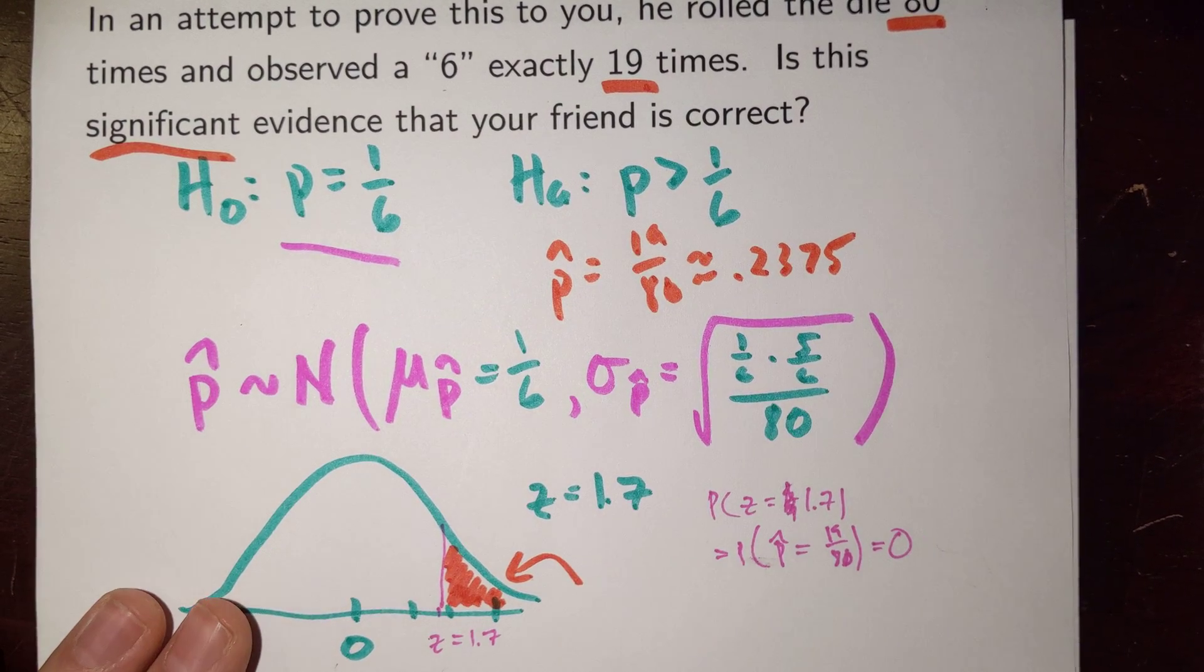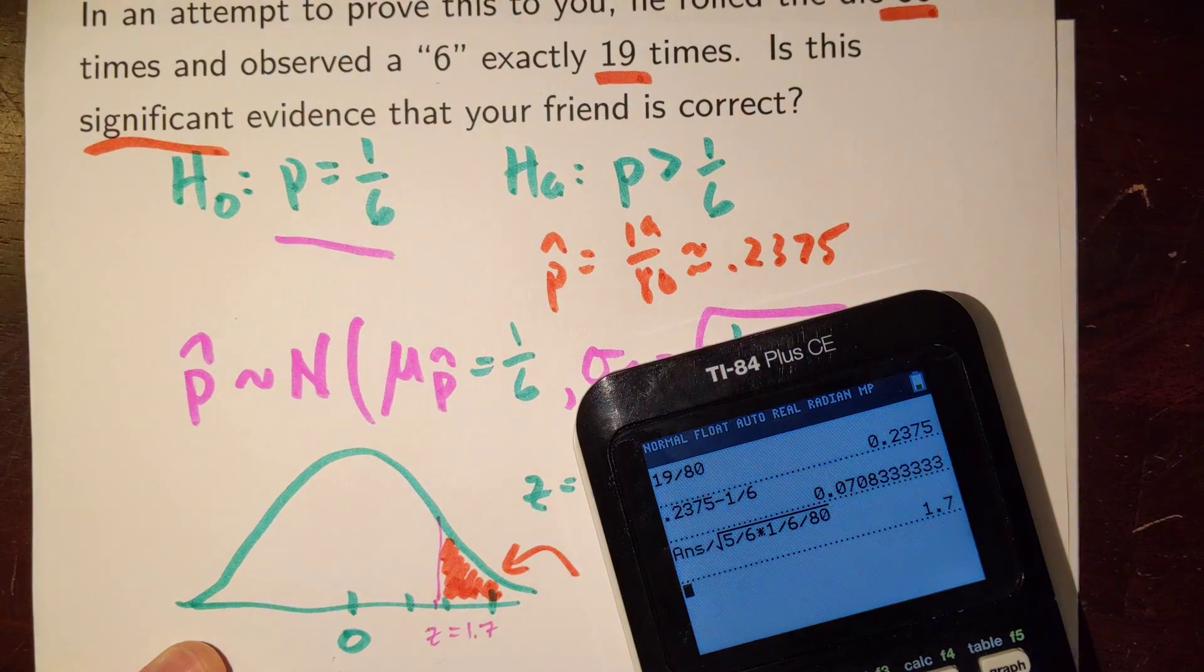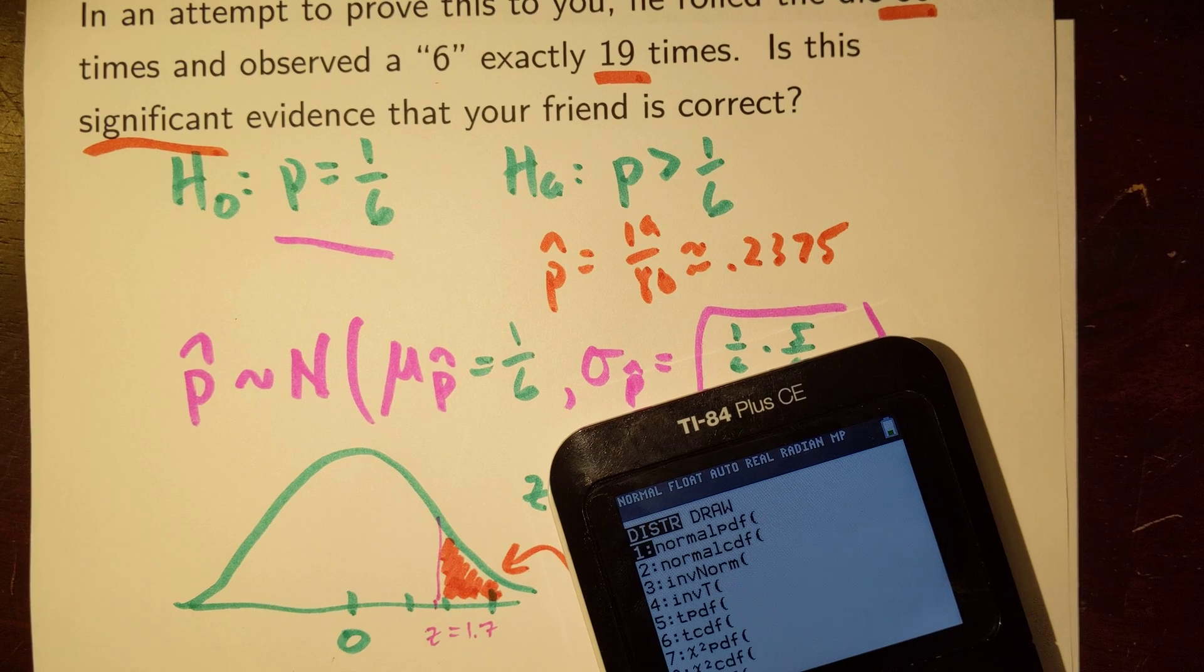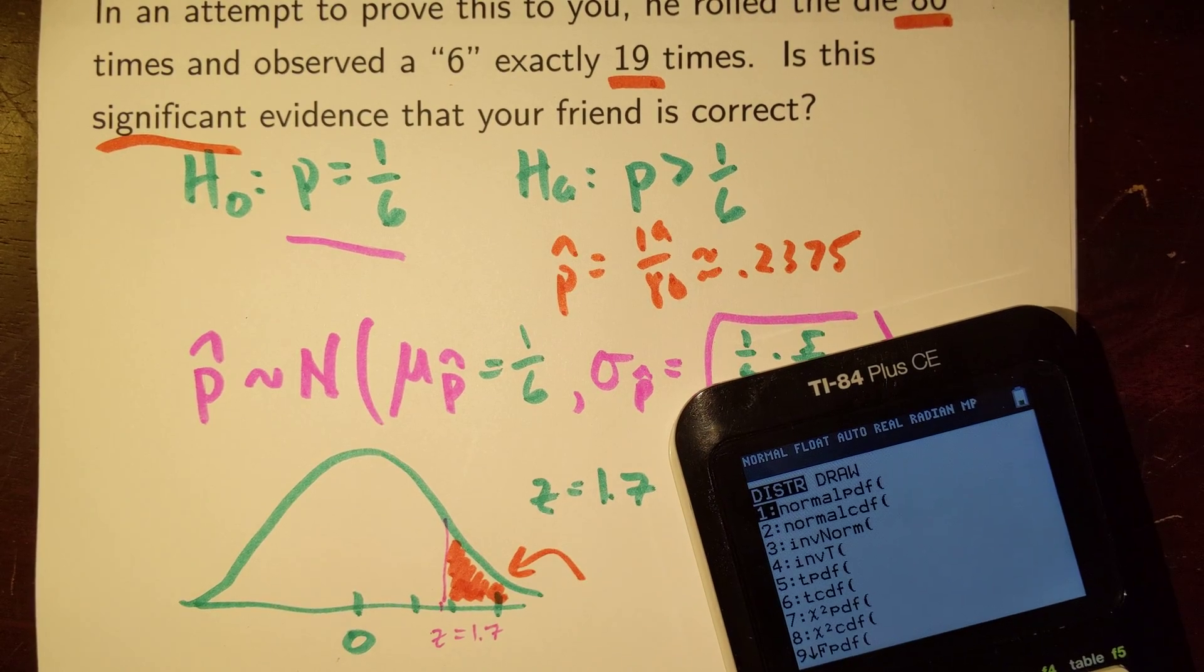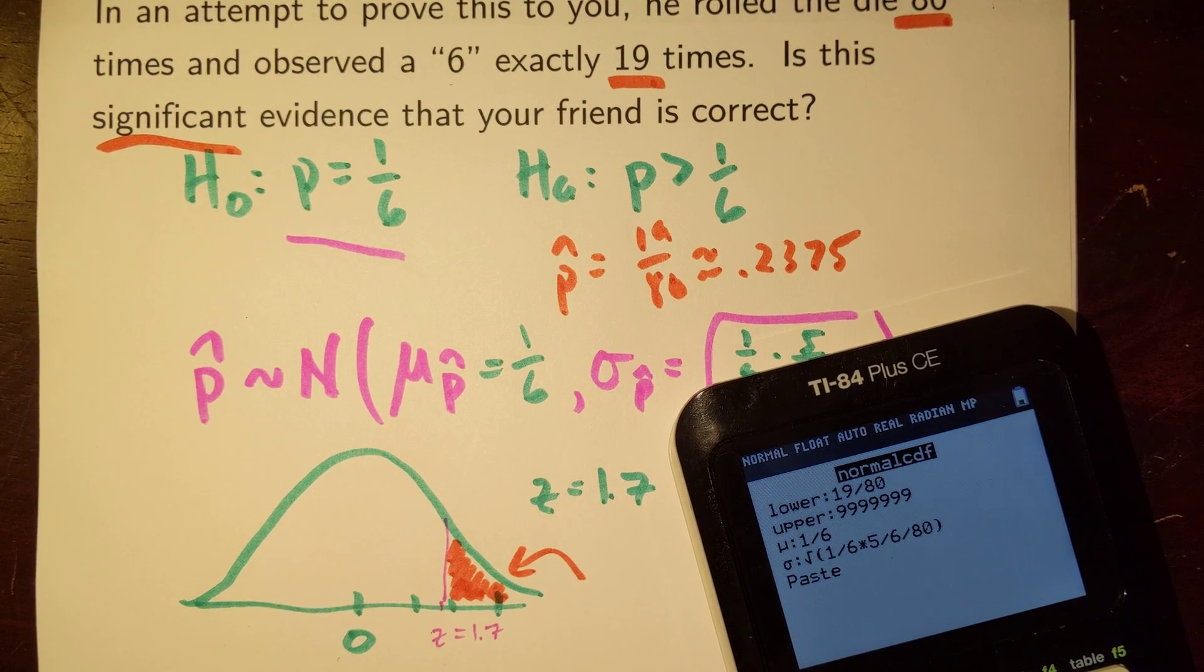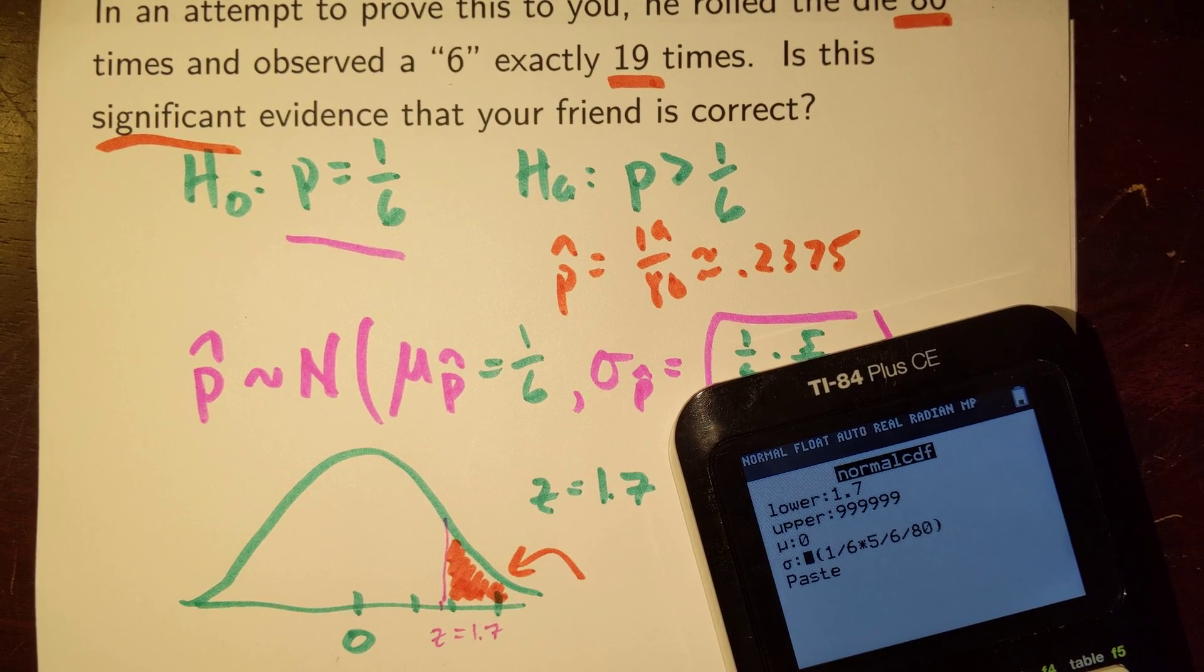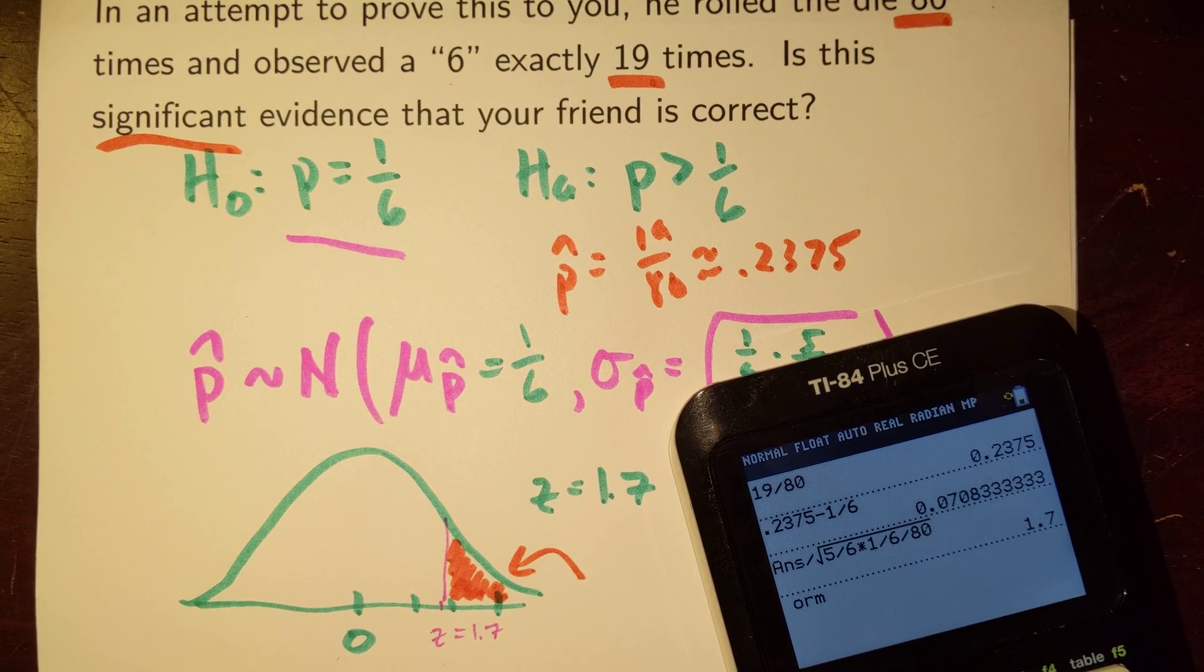So to calculate this probability, we could just use normal CDF. And since I already calculated a Z-score, instead of plugging in all these crazy values, let me just use the Z-score. I can give second VARs. I'll go to normal CDF. And I got a bunch of junk in here. My lower bound is 1.7. My upper bound is like positive infinity. Let's say take a mean of zero, a standard deviation of one. Then let's calculate that.